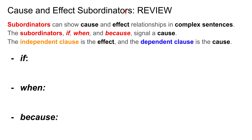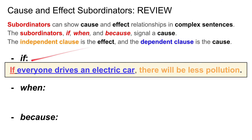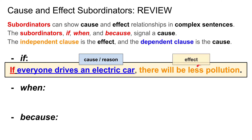Let's talk about cause and effect subordinators. Subordinators can show cause and effect relationships in complex sentences. The subordinators 'if,' 'when,' and 'because' signal a cause. When you add these, you get a dependent clause which is the cause, and the independent clause is the effect. For example: 'If everyone drives an electric car' is the dependent clause — the cause. 'There will be less pollution' is the independent clause — the effect. So: 'If everyone drives an electric car, there will be less pollution.'